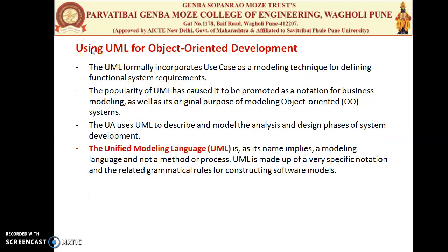The next topic is using UML for object-oriented development. UML formally incorporates use cases as a modeling technique for defining the functional requirements of systems. The popularity of UML has caused it to be promoted as the notation for business modeling as well as its original purpose of modeling object-oriented systems. UML is the current notation for most enterprise application development today. The name itself — Unified Modeling Language — defines models with special notations and related grammatical rules for constructing software models.